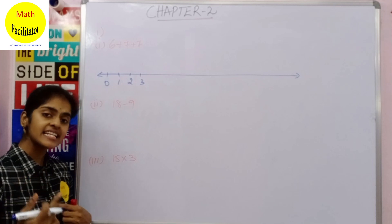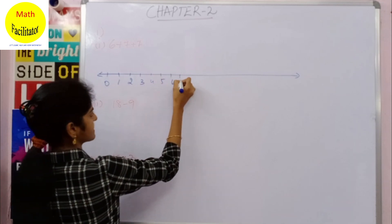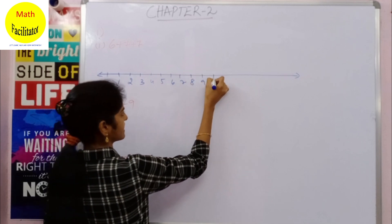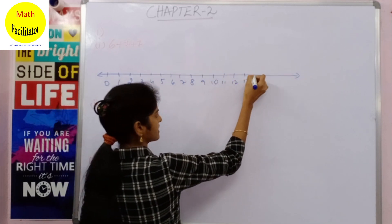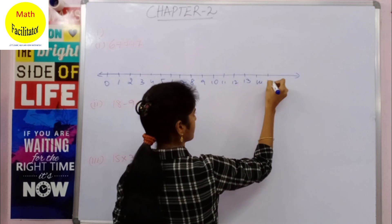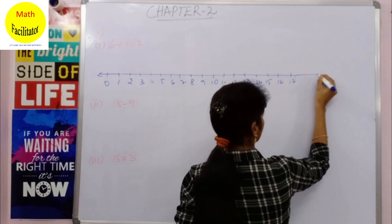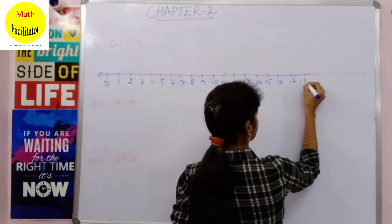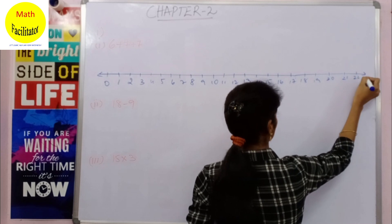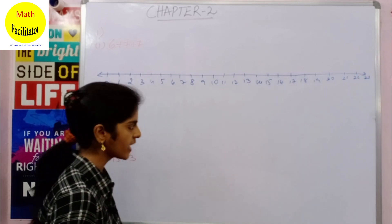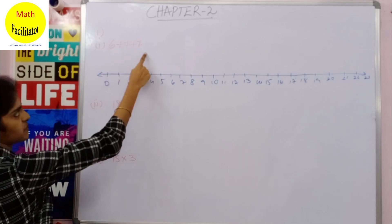Every distance will be the same. Now let us mark the numbers: 5, 6, 7, 8, 9, 10, 11, 12, 13, 14, 15, 16, 17, 18, 19, 20, 21, 22, 23, and so on. Now we have 6 plus 7 plus 7.